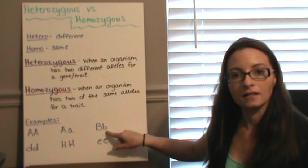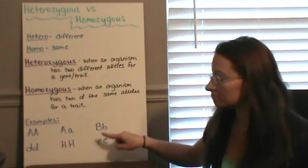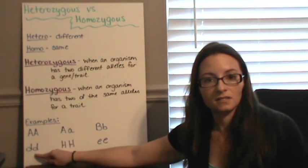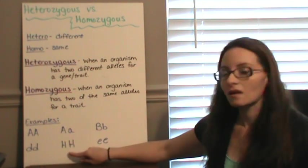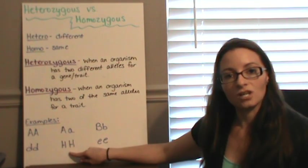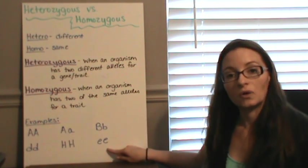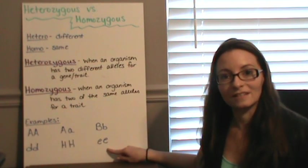Here again, upper case B, lower case B is heterozygous. Down here, lower case D, lower case D would be homozygous recessive. Upper case H, upper case H would be homozygous dominant. And lower case E, lower case E would be homozygous recessive.